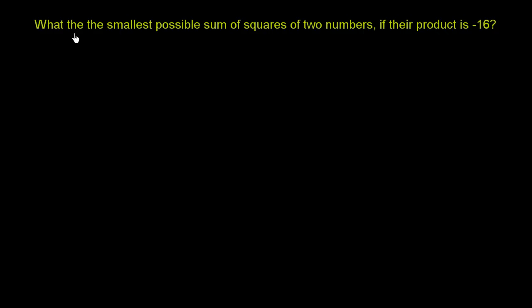We are being asked, what is the smallest possible sum of squares of two numbers if their product is negative 16? So let's say that these two numbers are x and y. How could we define the sum of the squares of the two numbers? I'll just call that the sum of the squares, s for sum of the squares, and it would just be equal to x squared plus y squared.